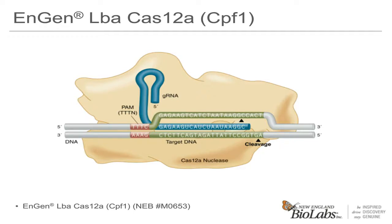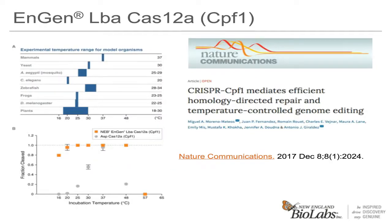LbCas12a also has different biophysical properties. AsCas12a has the same PAM sequence requirement as LbCas12a, but they differ in their temperature activity profiles. This can be useful when considering experimental systems or organisms that require different temperatures, such as zebrafish and Xenopus. LbCas12a works at temperatures below which AsCas12a has reduced or no activity, as highlighted in a recent paper published in Nature Communications by Antonio Giraldez.